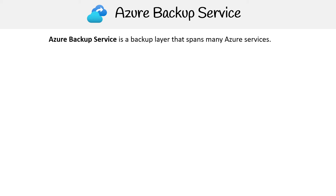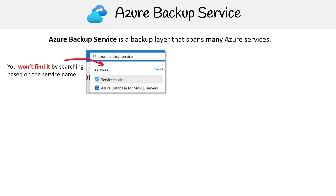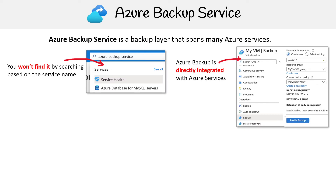Let's take a look at Azure Backup Service. This is a backup layer that spans multiple Azure services. You won't find it by typing in the search bar — nothing will show up there. Instead, it appears under individual services, which will typically have a backup tab, and from there you can enable backup and set a bunch of options.